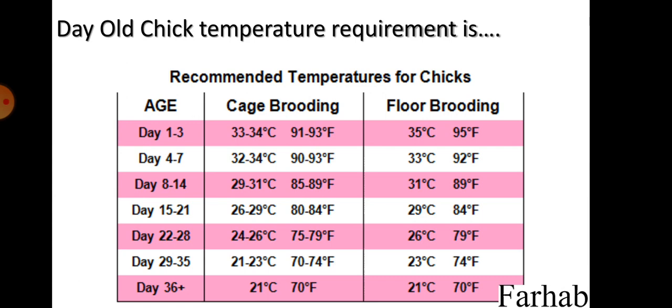Day-old chick temperature requirement is 33 to 34 degrees centigrade, or 91 to 93 degrees Fahrenheit. For both cage and floor brooding, it is 33 to 35 degrees centigrade, or 91 to 95 degrees Fahrenheit. As the age of the bird increases, the critical temperature decreases from 33 degrees centigrade on day 1 to 21 degrees centigrade on day 36.